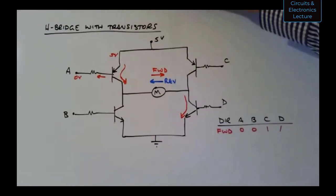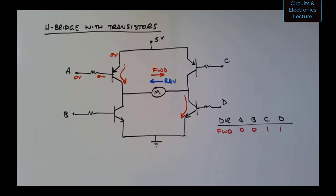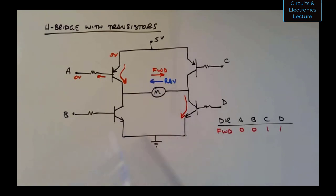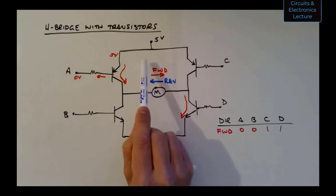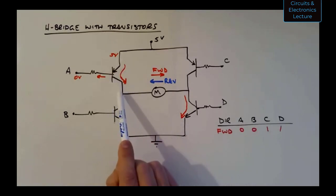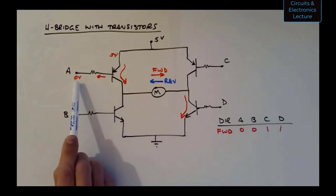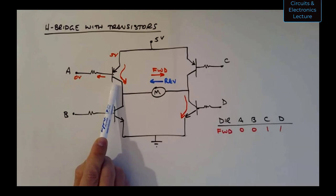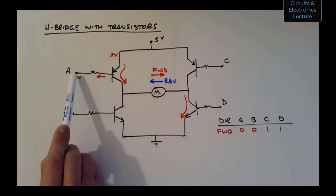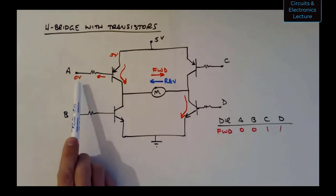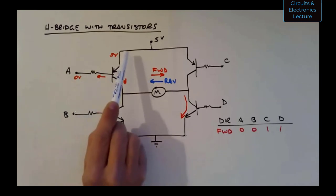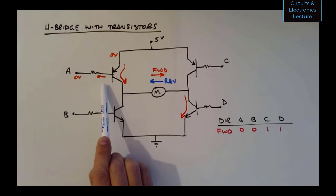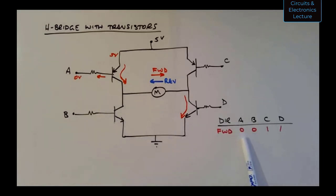Moving back to the whiteboard — this is where we left off last time with the H-bridge. We have four transistors, a power supply, and ground. When we want the motor to turn in the forward direction, we want current to go from left to right through the motor. To do that, transistor A must be saturated and transistor D must also be saturated. Since A is a PNP transistor, we apply zero volts at A — a logical zero — with five volts at the emitter, so current flows and that transistor saturates.